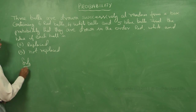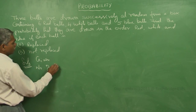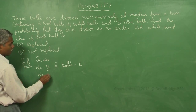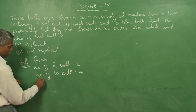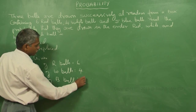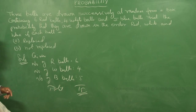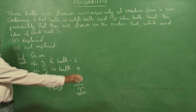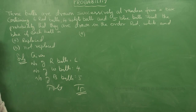Number of red balls is equal to 6. Number of white balls is equal to 4. Number of blue balls is equal to 5. The total is 15. This is the given data — there are 15 balls. Now we will solve subdivision (a), that is, each ball is replaced.